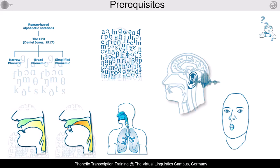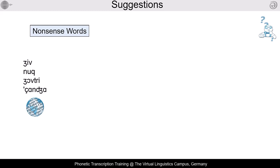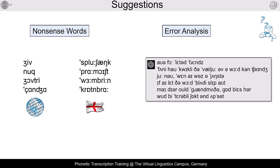But how can we realize phonetic training in the age of large language models? I recommend two central options: the use of language-independent and language-specific nonsense words, and the analysis of language-specific erroneous material.